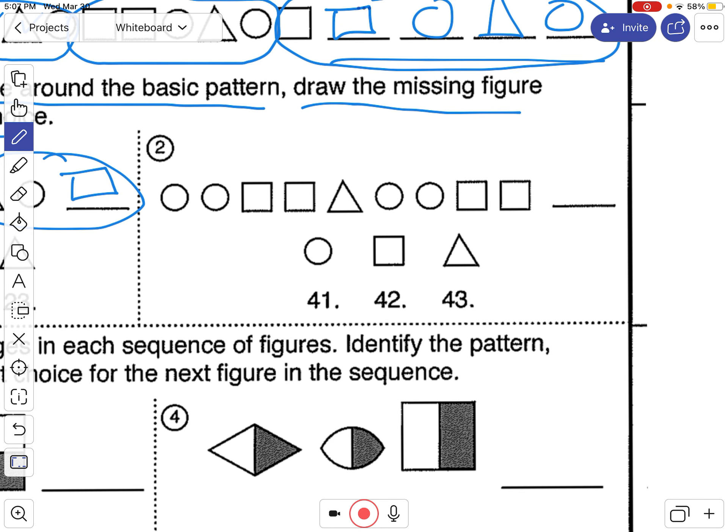So you should have circled. We have circle, circle, square, square, triangle. And then it starts over again, circle, circle. So you circle this and then circle this. Notice there's five shapes. One, two, three, four, five in each pattern, right?